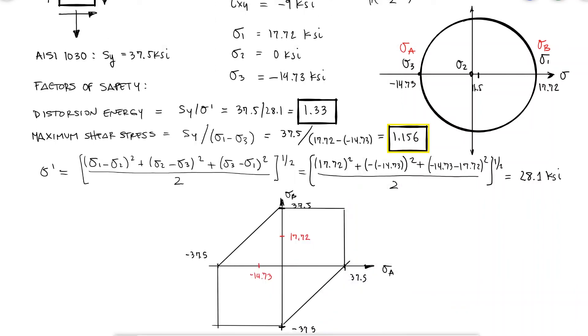The 1.16 value is the ratio between the distance from the origin to the boundary line passing through the stress state and the distance from the origin to the stress state. For distortion energy, the only thing that changes is that boundary line,